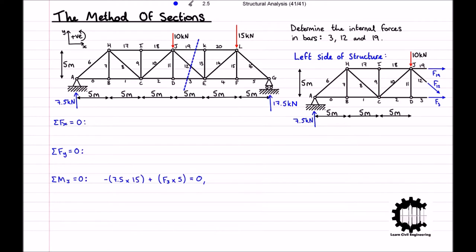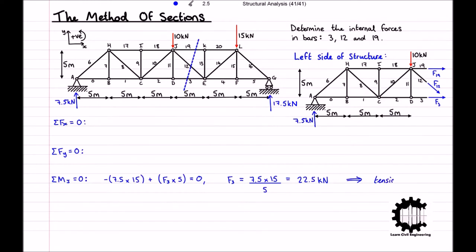With only one unknown, we can solve directly: F3 equals 7.5 times 15 divided by 5, which equals 22.5 kilonewtons. As F3 is positive and we assumed all unknowns to be tensile, we can conclude that F3 is a tensile internal force of magnitude 22.5 kilonewtons, and so bar 3 is under tension.